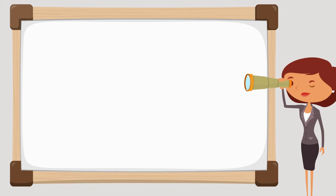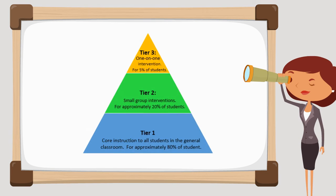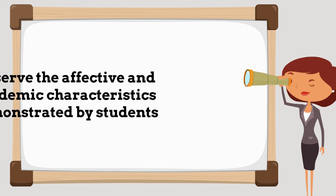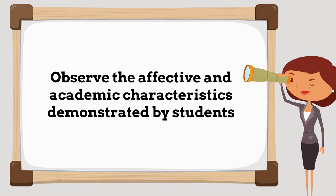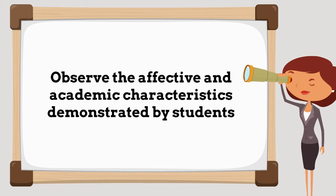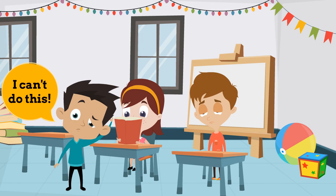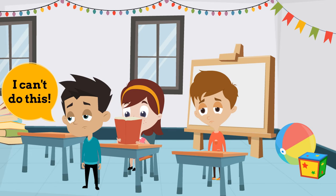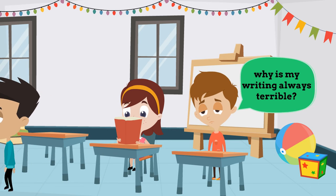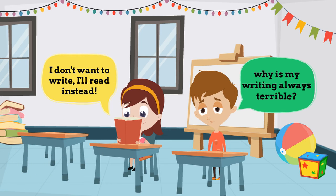Throughout each tier and during instruction, teachers can also identify writing difficulties by observing the characteristics that students demonstrate in the classroom. Students may show stress and anxiety when faced with writing tasks, lose interest in and become less motivated to complete handwriting activities, resist and avoid participating in written work altogether, and experience low self-esteem from their lack of success.